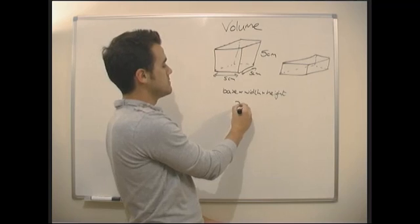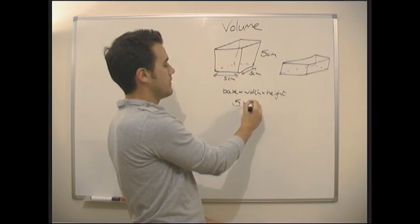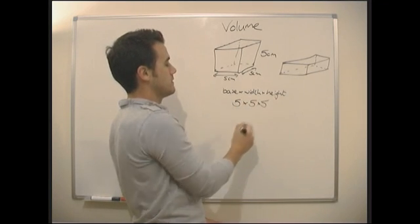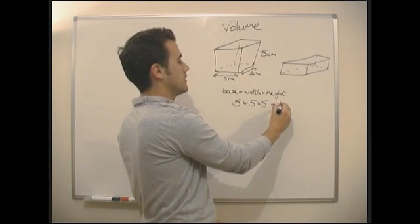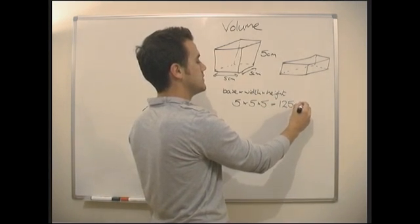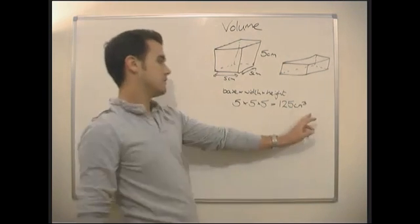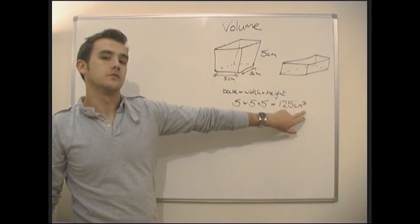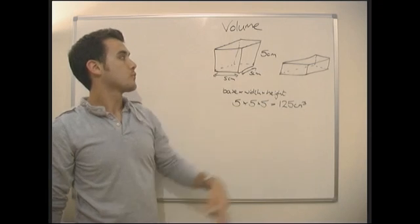So in this case, they're all the same. So it would be 5 times 5 times 5, which would give us 125 centimeters cubed. Volume's always cubed when we're talking units.